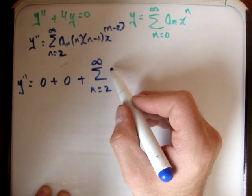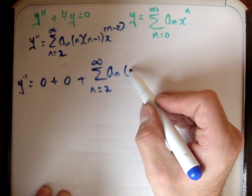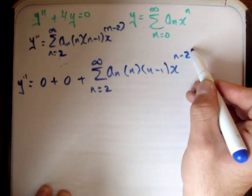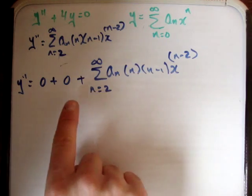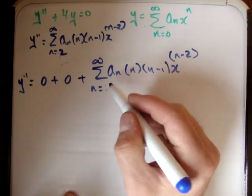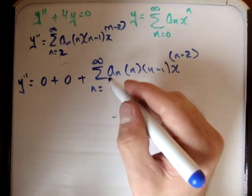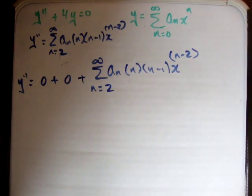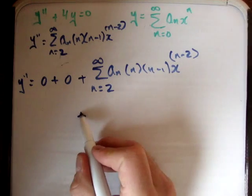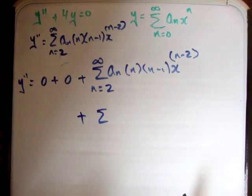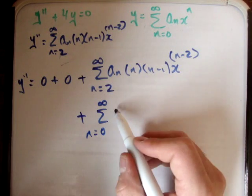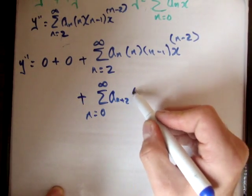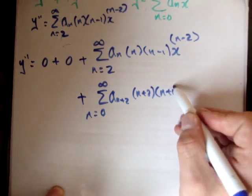So we can write starting from n equals 2: a_n times n times n minus 1 times x to the n minus 2. Now we shift y double prime upwards — everywhere we have an n, we replace it with n plus 2, and we decrease the lower limit by 2, so it becomes n equals 0 to infinity of a_{n+2} times (n+2) times (n+1) times x to the n.